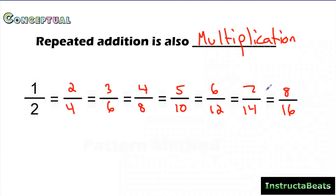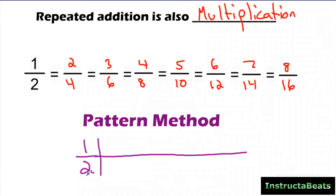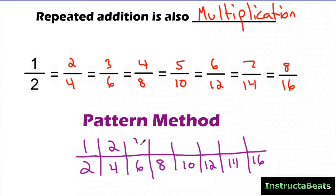We know repeated addition is also multiplication, and that's what the pattern method is going to use. If I just write down one-half here and draw my fraction bar all the way out, I'm going to skip count by two: two, four, six, eight, ten, twelve, fourteen, sixteen. I've just listed out all the denominators of my equivalent fractions. Now one is the numerator, so if I skip count by one: one, two, three, four, five, six, seven, eight.